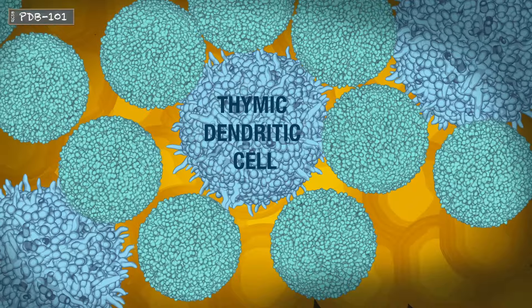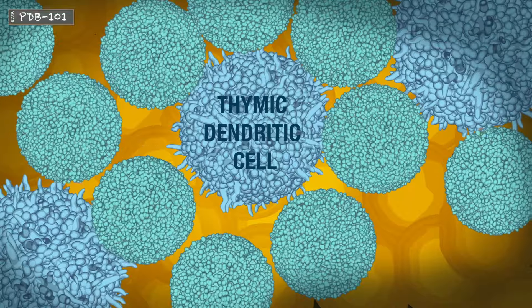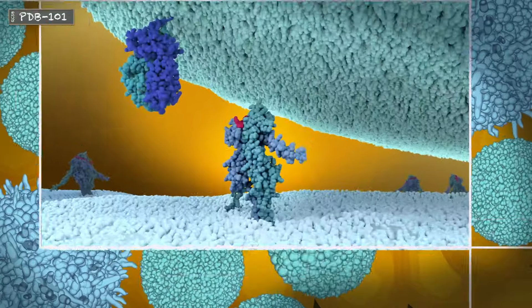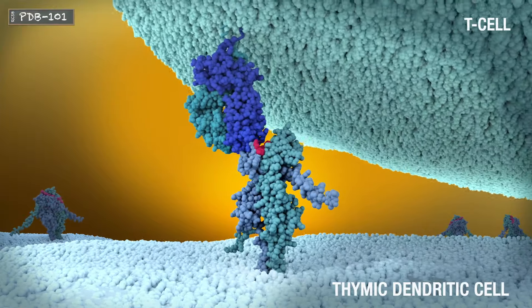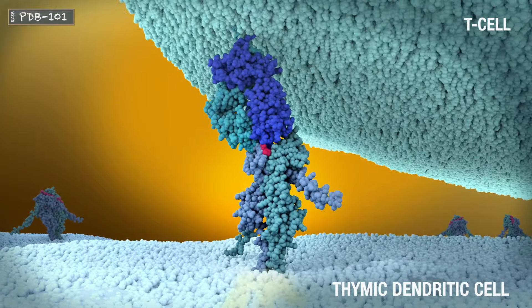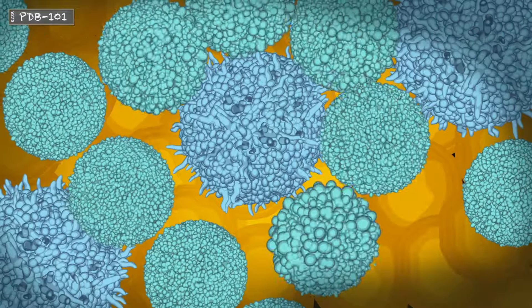Within the thymus, the TCRs are tested against the body's database of self sequences as a preventative measure against autoimmunity. If a match occurs, the self-reactive TCR is destroyed, together with the T cell itself.